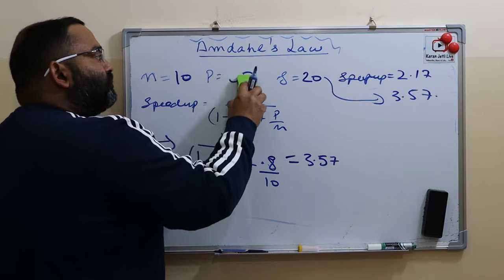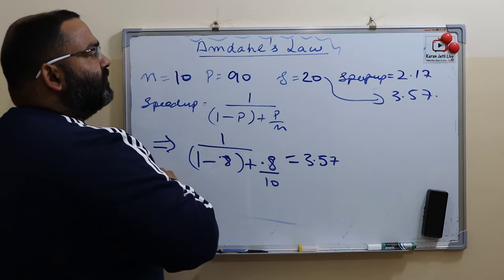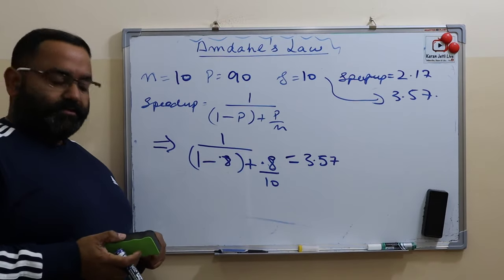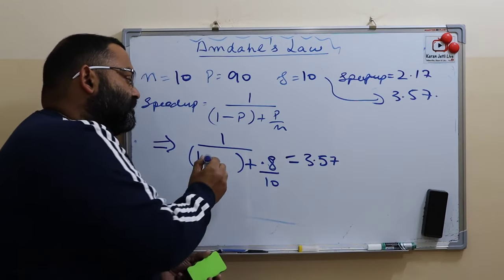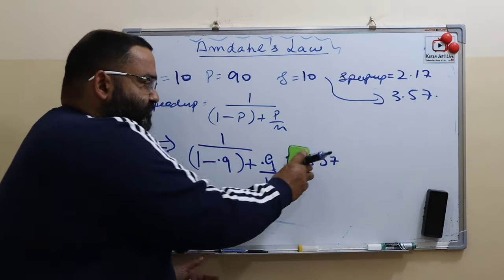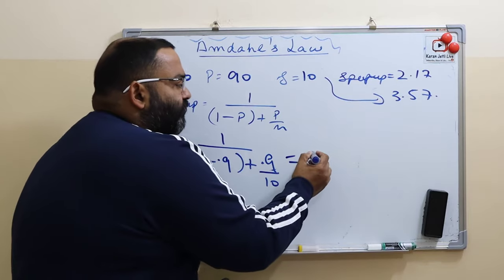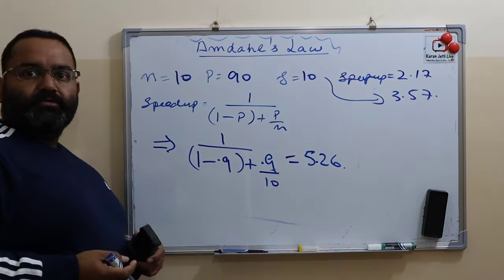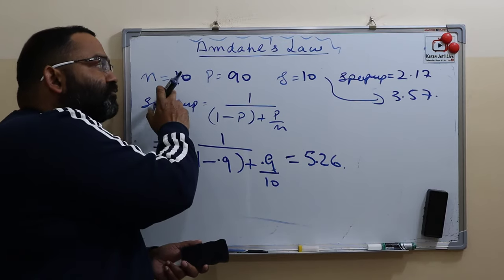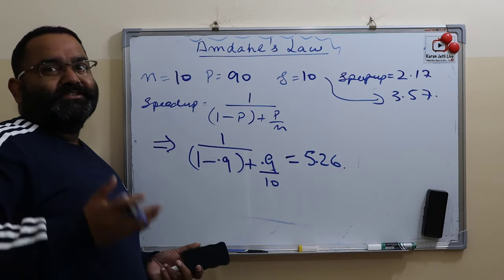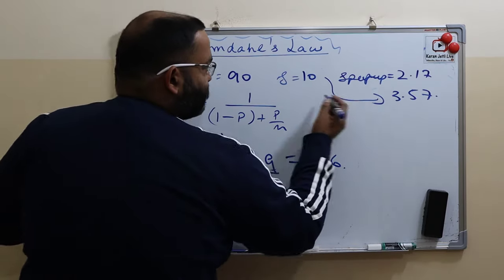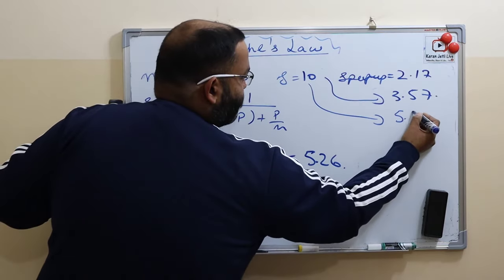Now let the program be 90% parallel and 10% sequential. The speed up = 1 / [(1 - 0.9) + 0.9/10] = approximately 5.26. So even with 90% of the program parallel, 10 processors still cannot make it 10 times faster — only about 5 times faster.